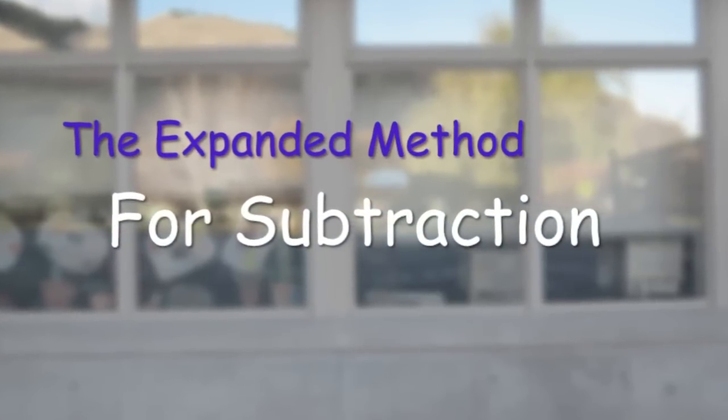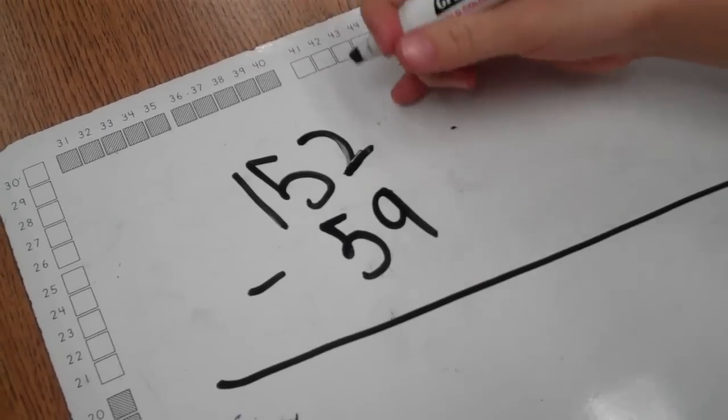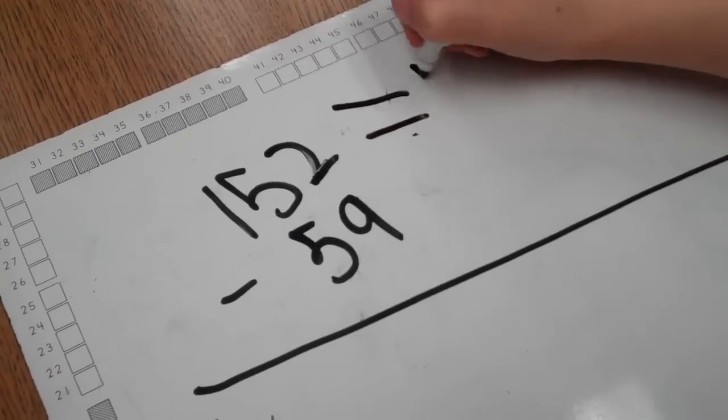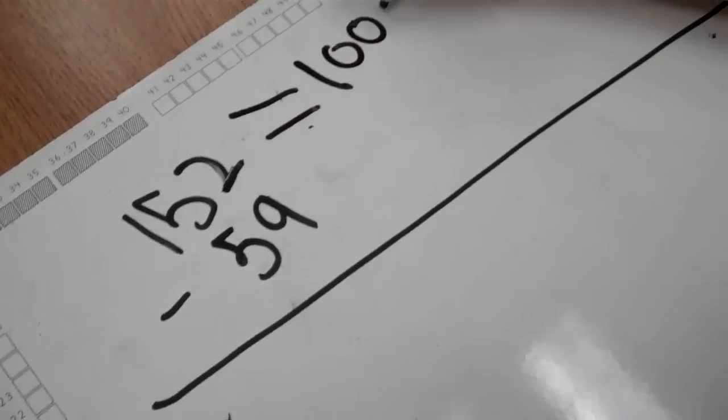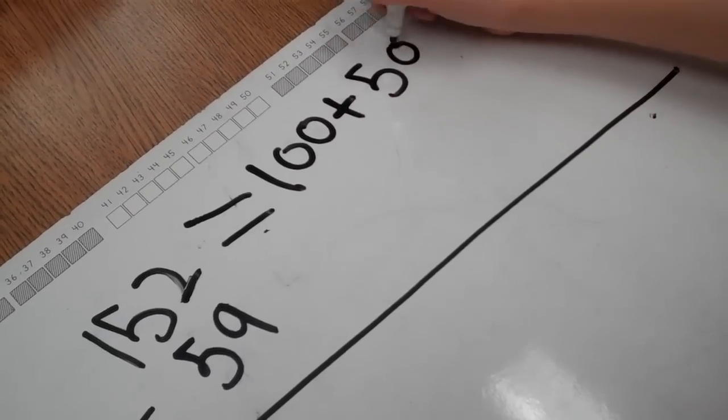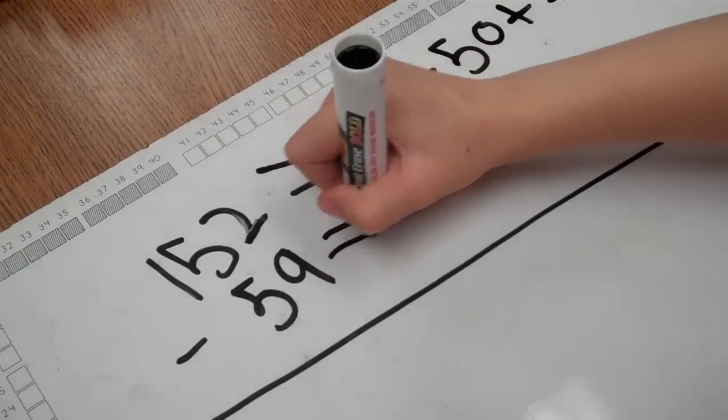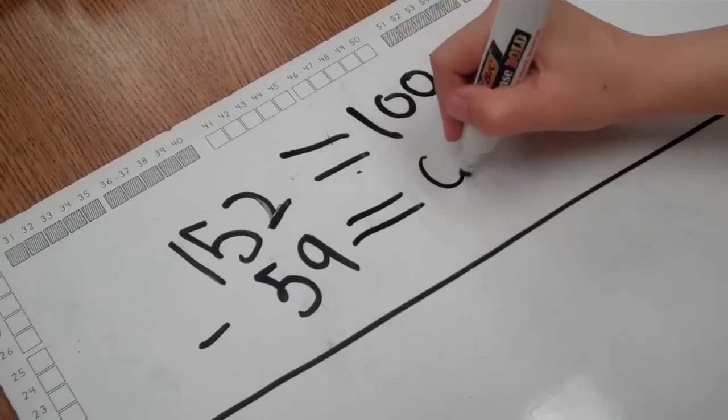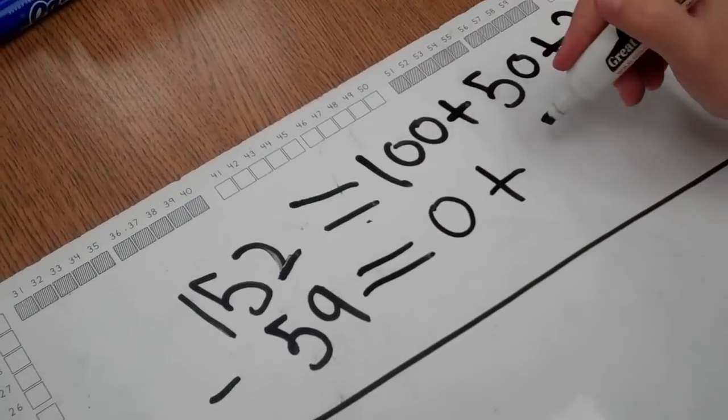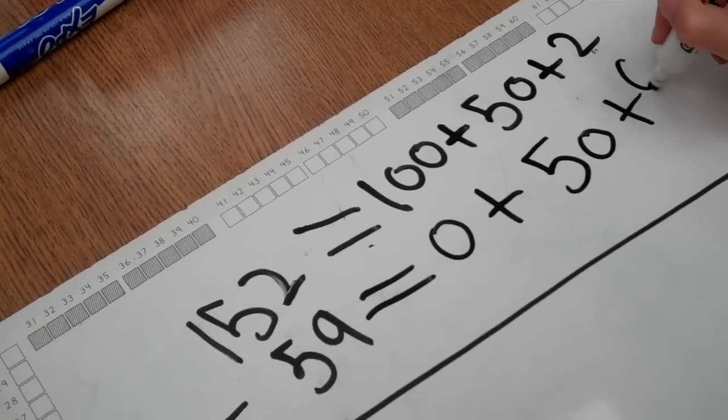In second grade, students learn a strategy called the expanded method to do subtraction. Now the student is going to think about each number and expand the number. So the student is thinking about 152 is equal to 100 plus 50 plus 2. And now the student is going to expand or break the number 59 apart. 59 is equal to 0 hundreds plus 50 plus 9.